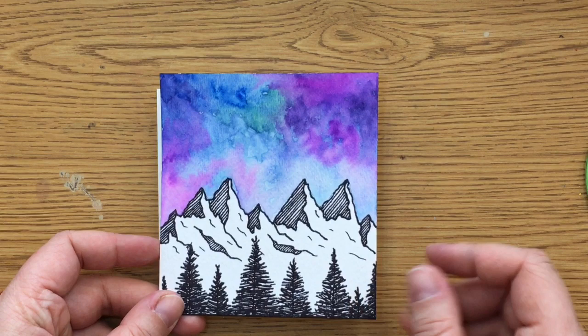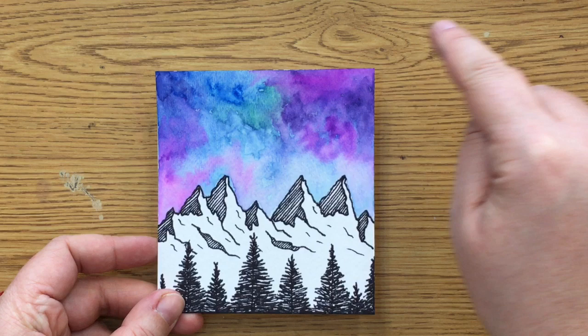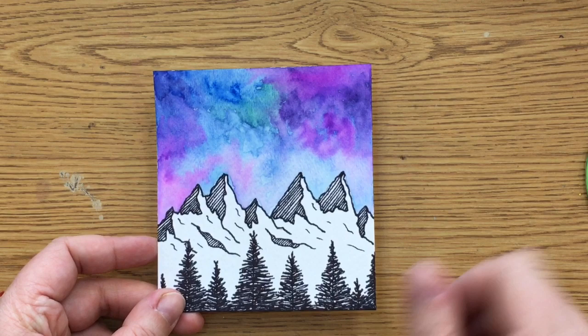Now for painting the sky, if we look at this example, look at how cool all of these colors blend right into another. They kind of like almost have little fingers that spread from one color to the next. I'm going to show you how to get that super cool effect.